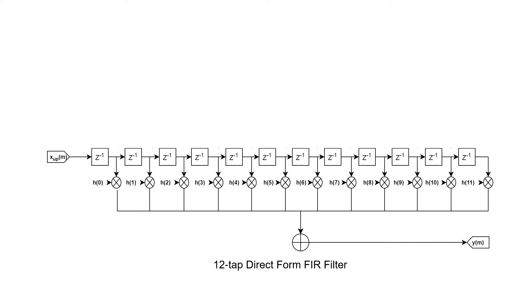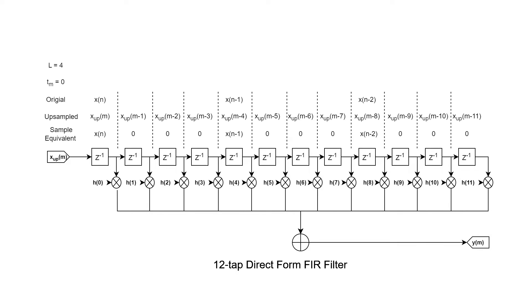Feeding an FIR filter a signal that contains a lot of zeros results in a lot of multiplications by zero. This implies that a big portion of the processing power used by the filter is wasted. This property can be used to reduce the computational load by skipping all calculations involving zeros. For example, with a signal upsampled by a factor of four, between each sample we have inserted three zeros. Applying this signal to a 12-tap FIR filter, nine out of the 12 samples in the delay line are zeros. Therefore, to obtain the output, we need only three multiply-accumulate operations.